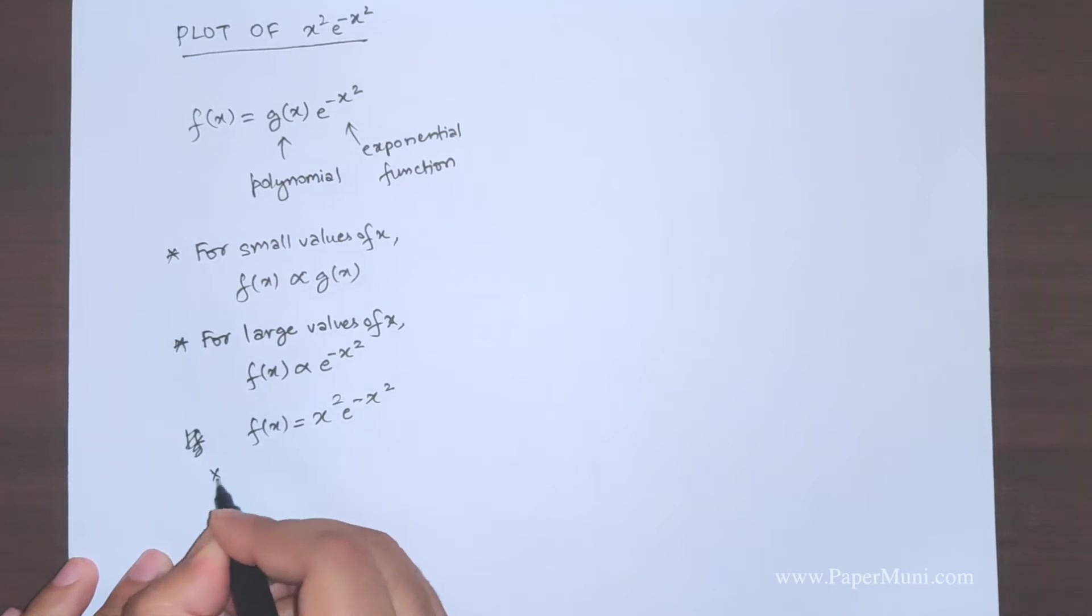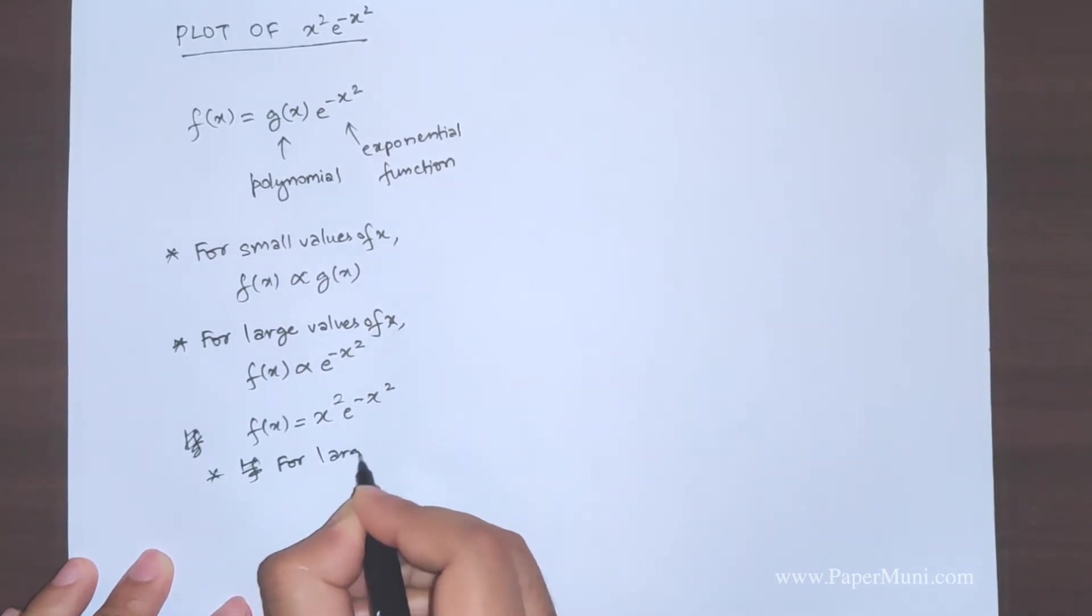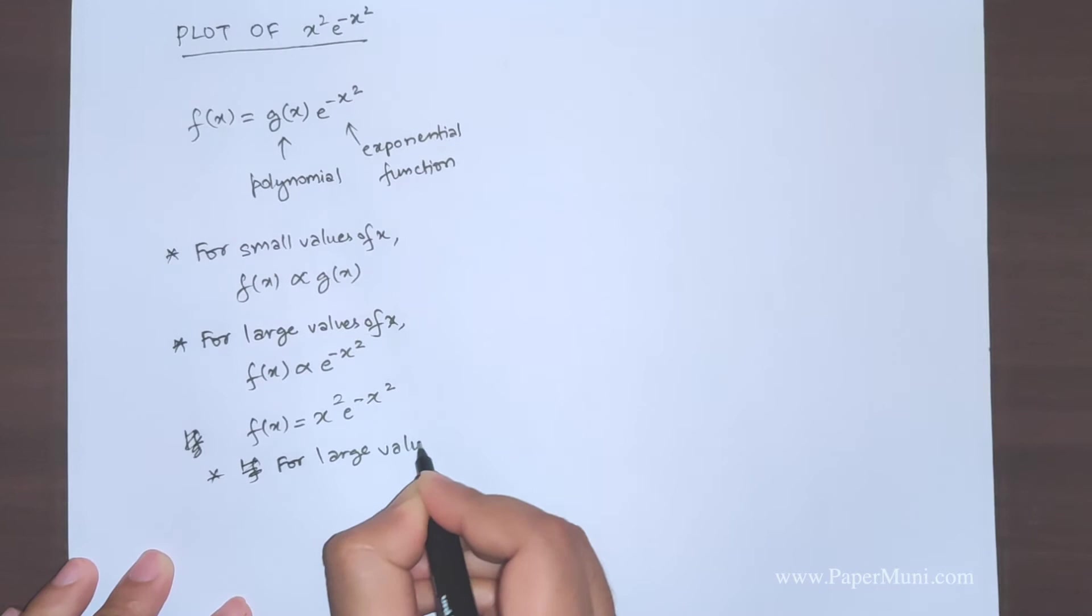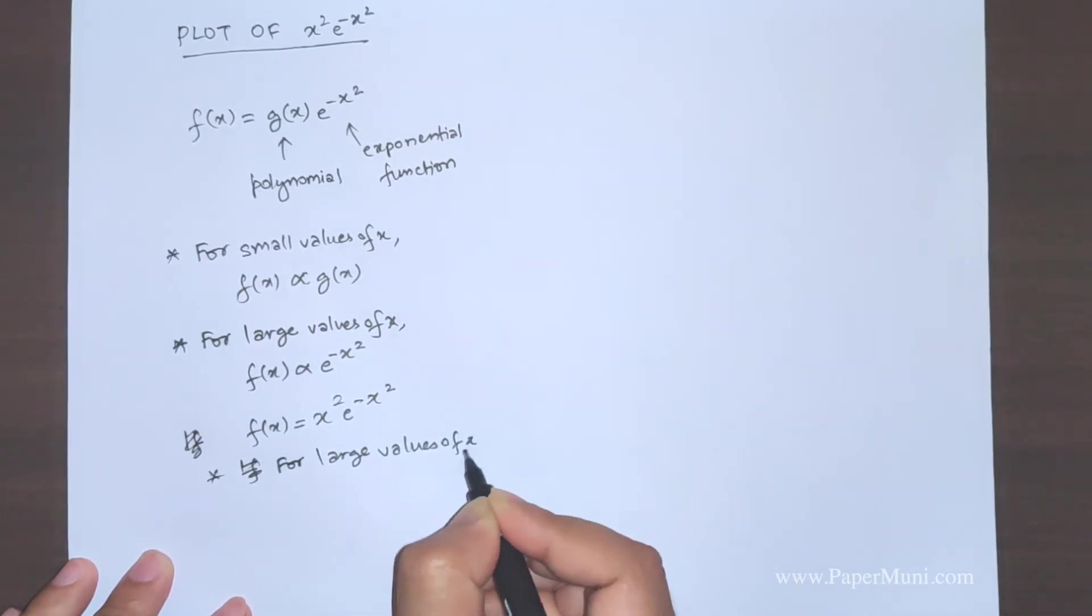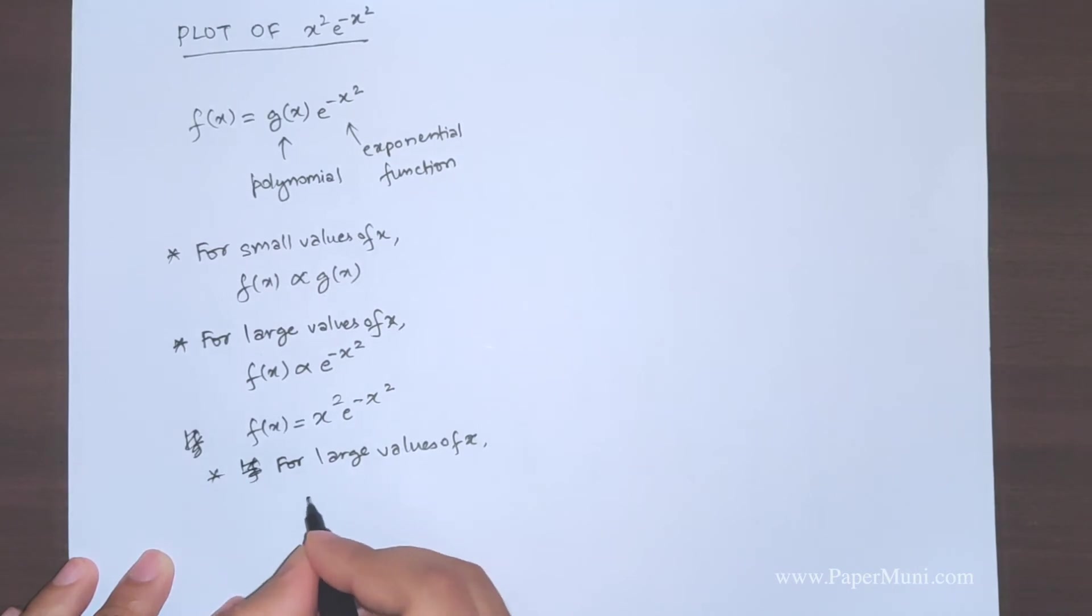If you have large values of x, so for large values of x, what we have is the function will depend on that it's far off from value x equal to 1.